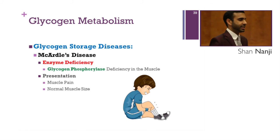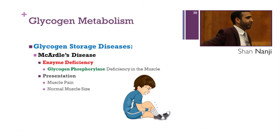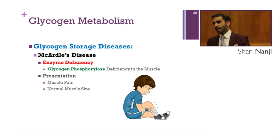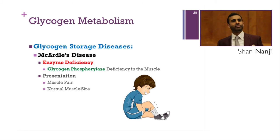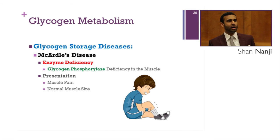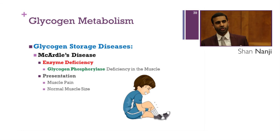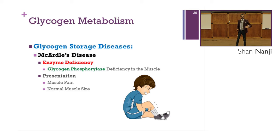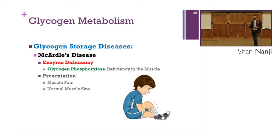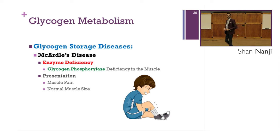McCardle's disease: M for McCardle's, M for muscle. The enzyme deficiency is glycogen phosphorylase in the muscle. Presentation includes muscle pain but normal muscle size, because glycogen remains in the muscle where most of it already is.